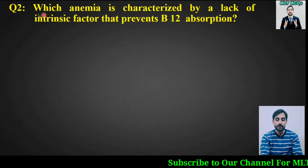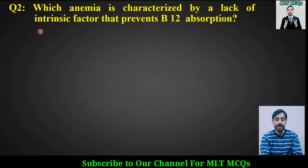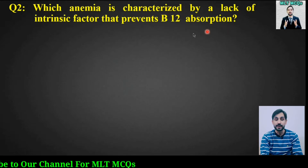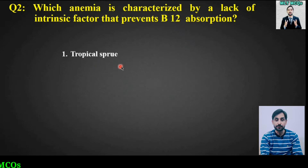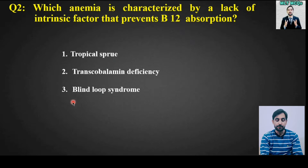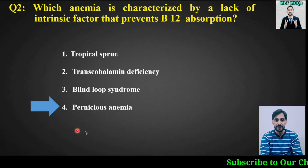MCQ number 2: Which anemia is characterized by a lack of intrinsic factor that prevents B12 absorption? Options are tropical sprue, transcobalamin deficiency, blind loop syndrome, or pernicious anemia. The right answer is option number 4: pernicious anemia.